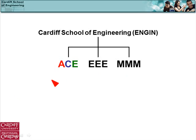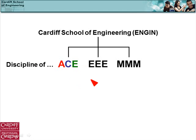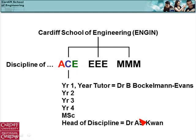Civil engineering runs both the undergraduate and MSc programmes. These are called the three disciplines, and within the ACE discipline you have the various years: year one, two, three, then MEng year four, and then the MSc.